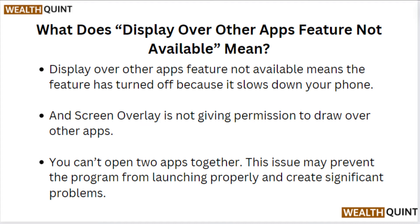What does 'Display over other apps feature not available' mean? It means the feature has been turned off because it slowed down your phone, and screen overlay is not giving permission to draw over other apps.